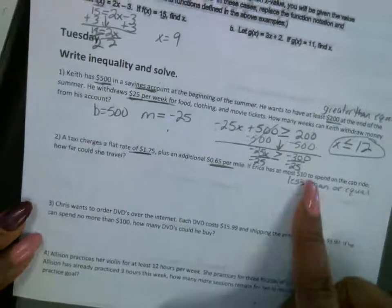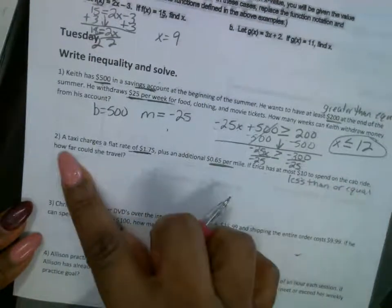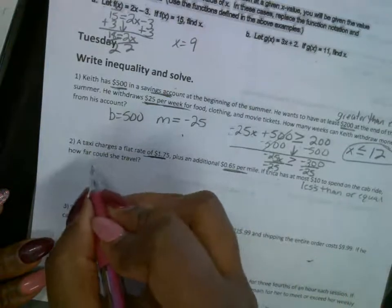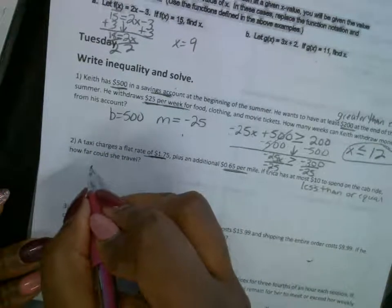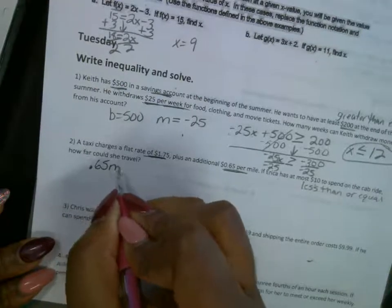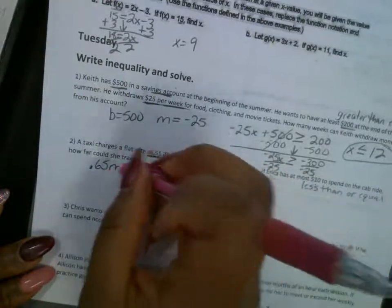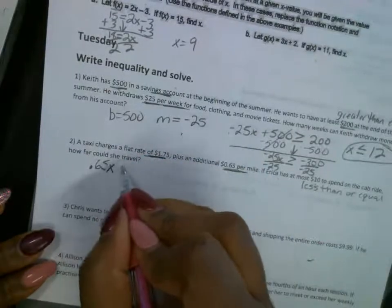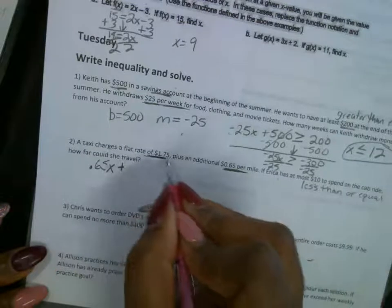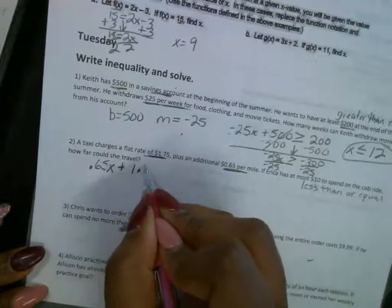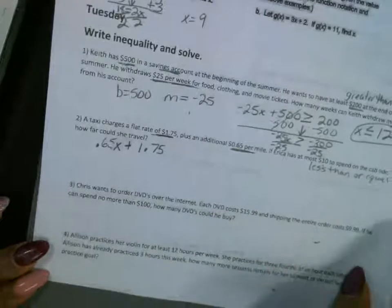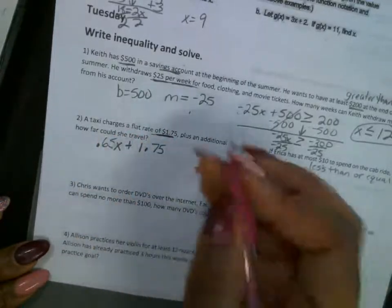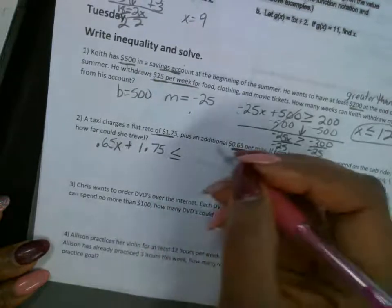All right. So how do we write this? It says, to spend on a taxi ride, how far does she travel? All right. So you have m, your slope, is $0.65x. Plus, you automatically have to pay the $1.75, which this right here has to be less than or equal to the $10.